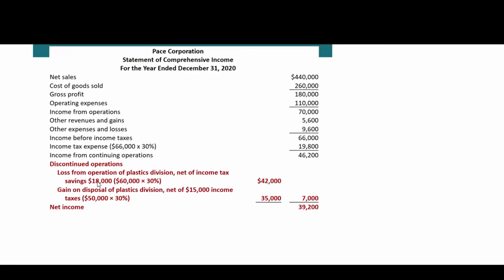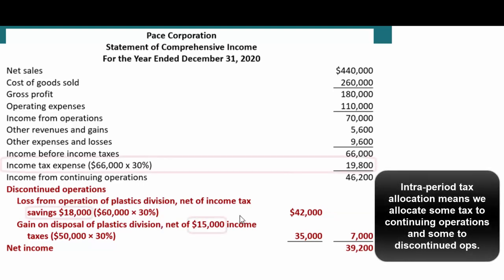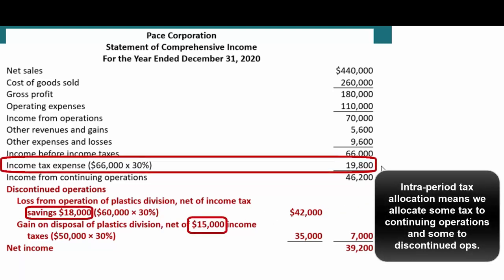So we have our loss from operating activity — we were running that thing during the year before we sold it, so that should be part of net income. We'll state it after tax because we do what's called an intra-period tax allocation: we allocate some tax expense up here and some tax expense down here. This is actually a tax benefit because we're running this thing at a loss, so we get a tax deduction.